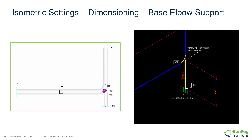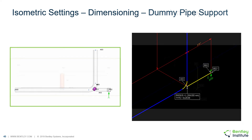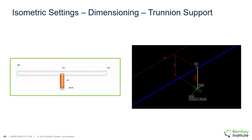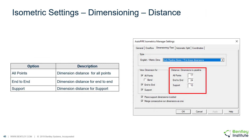I also want to show you some additional dimensioning capabilities. You can now view dimensions for your base elbow supports, your dummy pipe supports, and also if you have a trunnion in your model on a straight run. The last area of the dimensioning text tab allows you to adjust the values in the distance fields to modify the distance of the dimensions from their reference item.